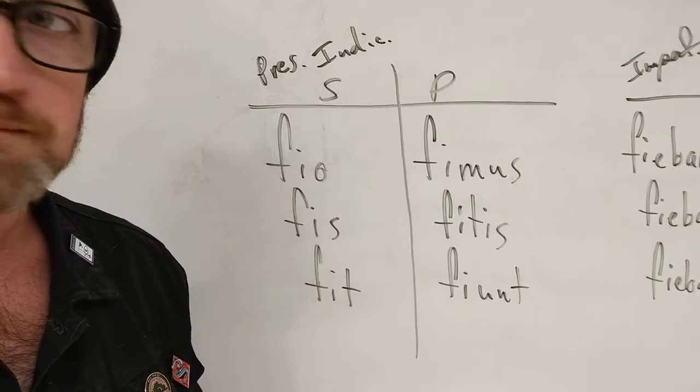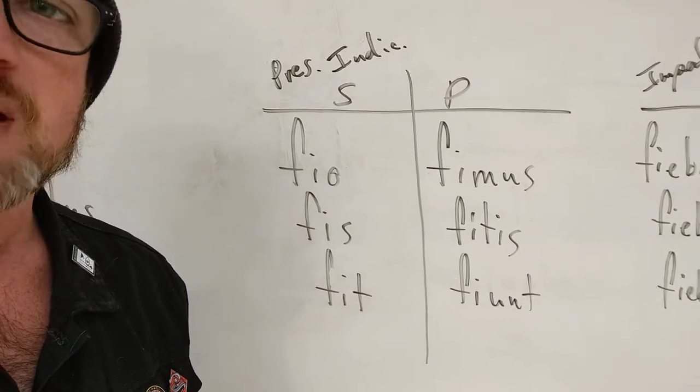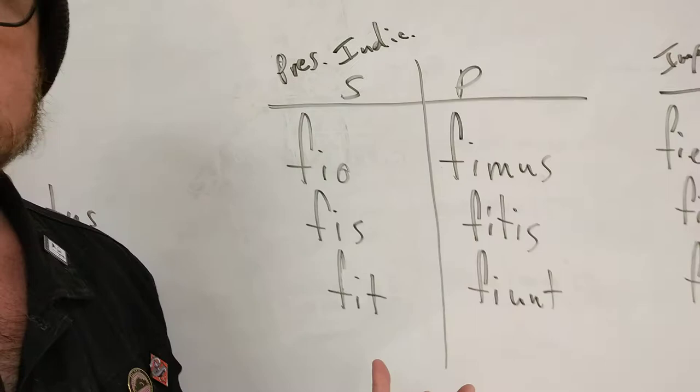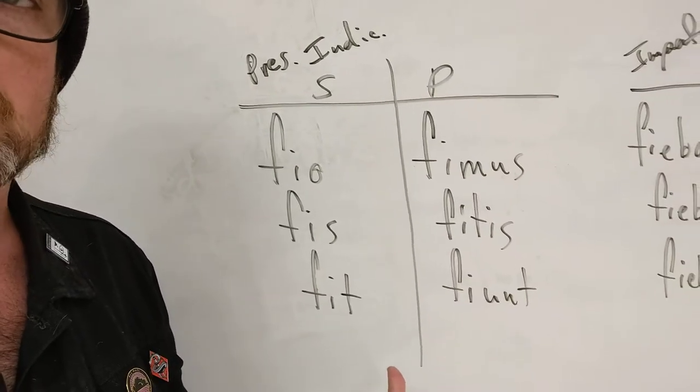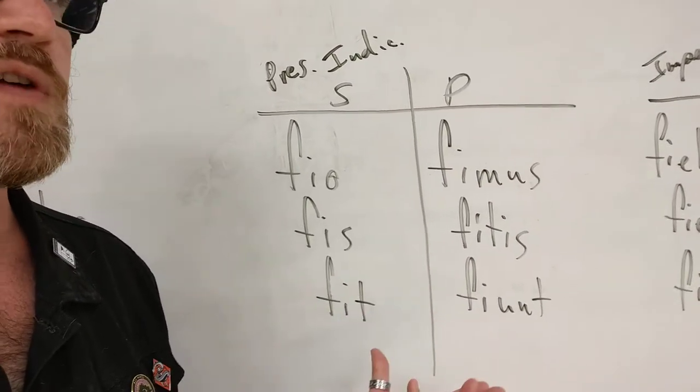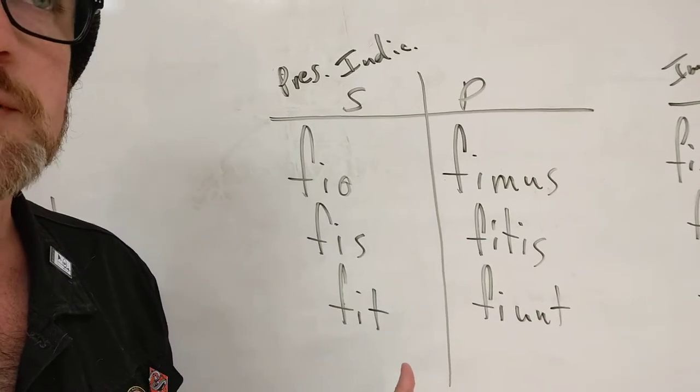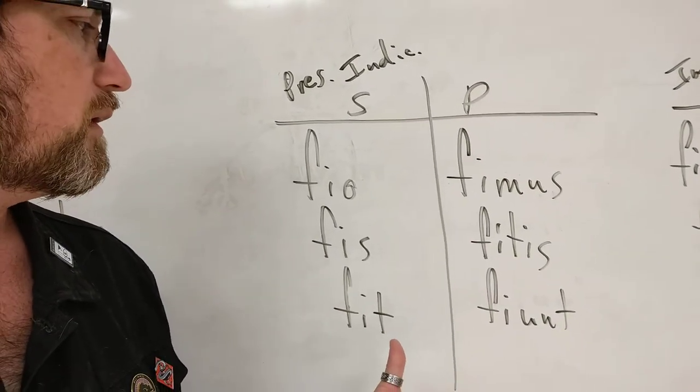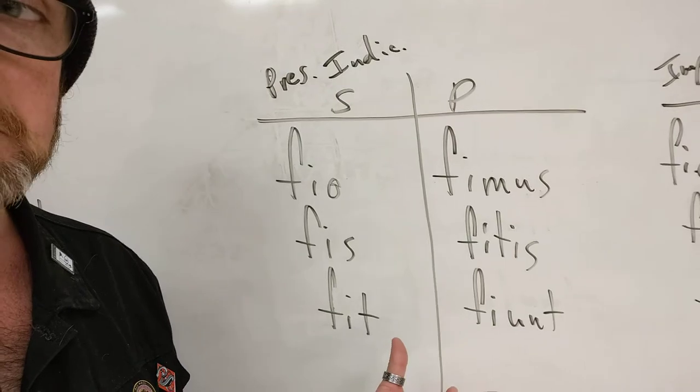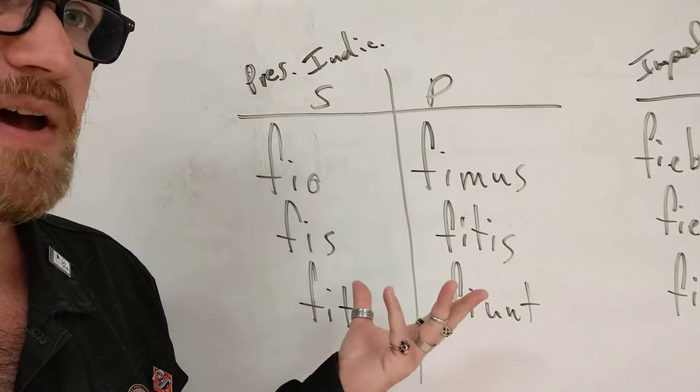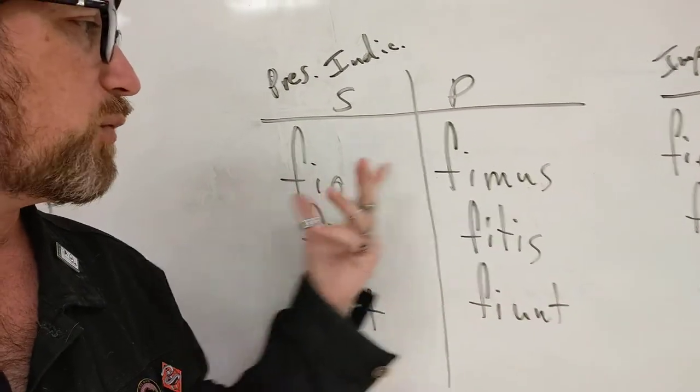Fio looks active but it isn't - it's passive. Now in terms of the actual conjugating, there's nothing that weird going on here. If you saw fio and just thought it was like a random fourth conjugation verb or a third io, which arguably it is sort of like a third io, it would conjugate like this.